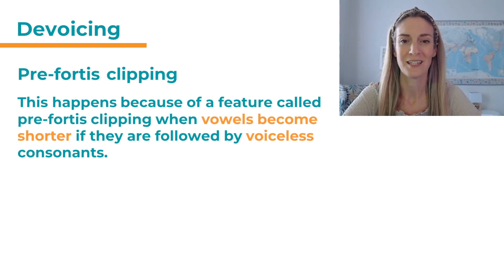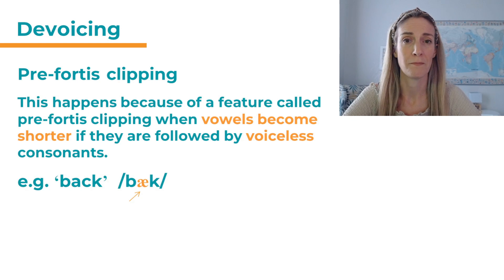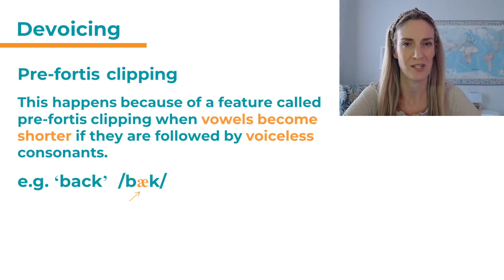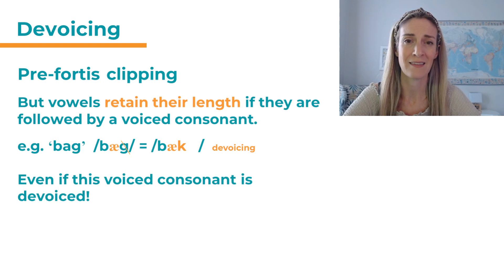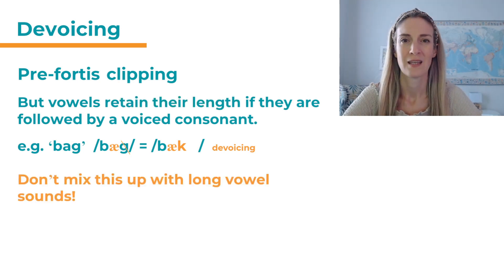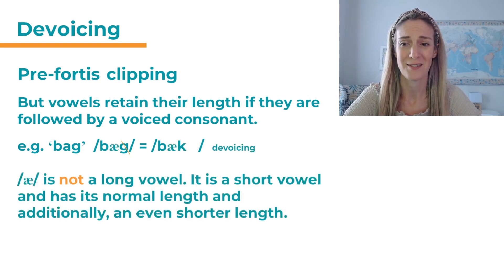This vowel shortening happens because of a feature called pre-fortis clipping. Vowels become shorter if they're followed by voiceless consonants. For example, in the word 'back', 'k' — our unvoiced consonant — follows on from the vowel, and that makes the vowel even shorter because of pre-fortis clipping. Vowels retain their length if they're followed by a voiced consonant, even if this voiced consonant is devoiced. So in 'bag', even if we have devoicing and the 'g' changes to 'k', it does not affect the vowel — here we have the vowel in its original length. Don't mix this up with long vowel sounds. 'a' is not a long vowel — it is a short vowel that just has its normal length, and additionally an even shorter length.